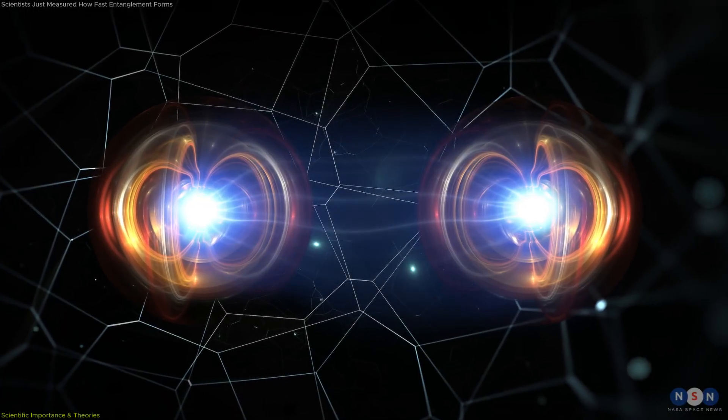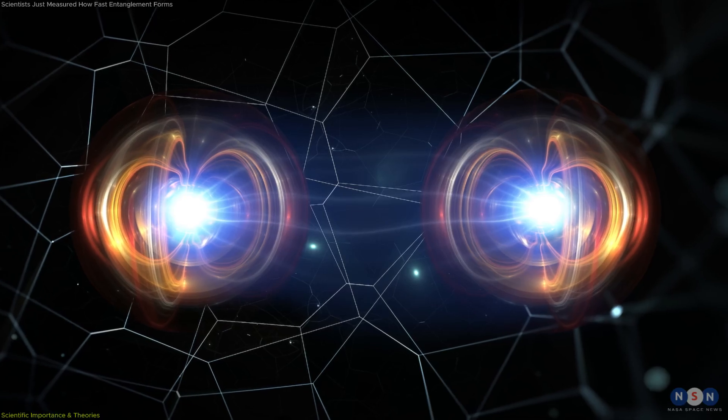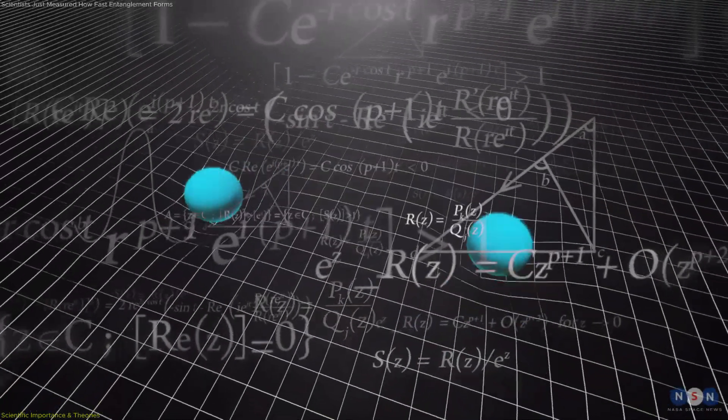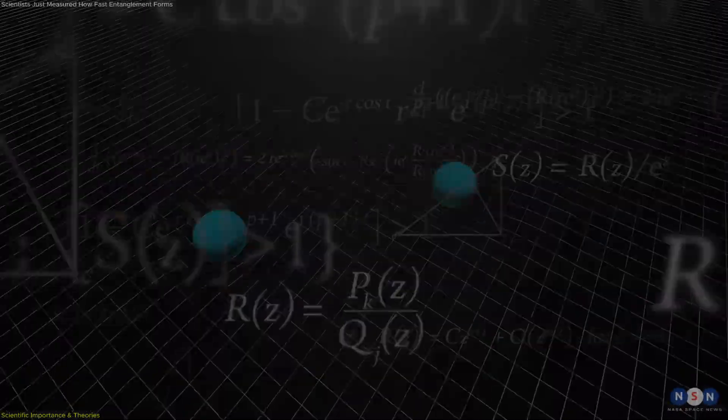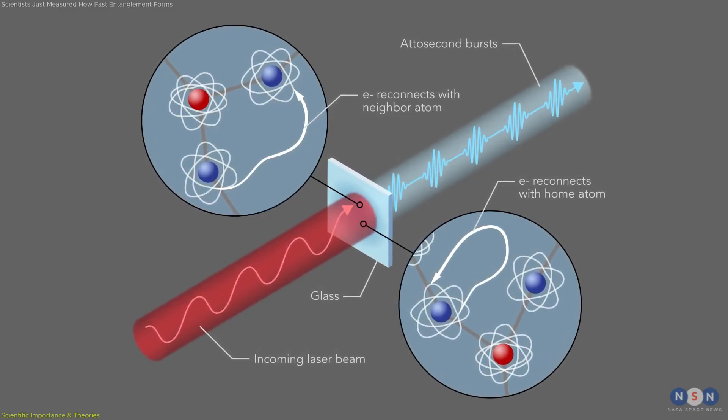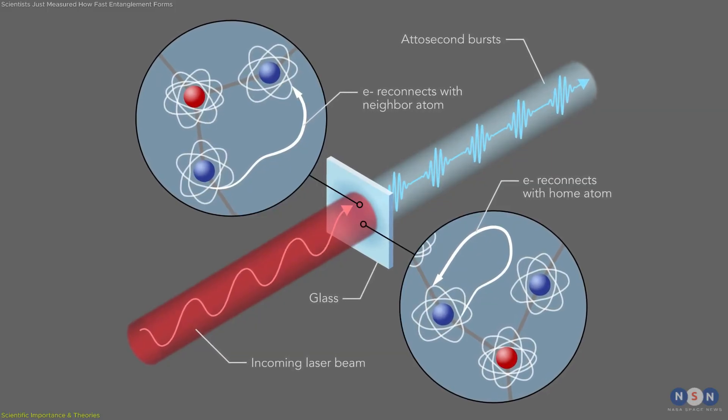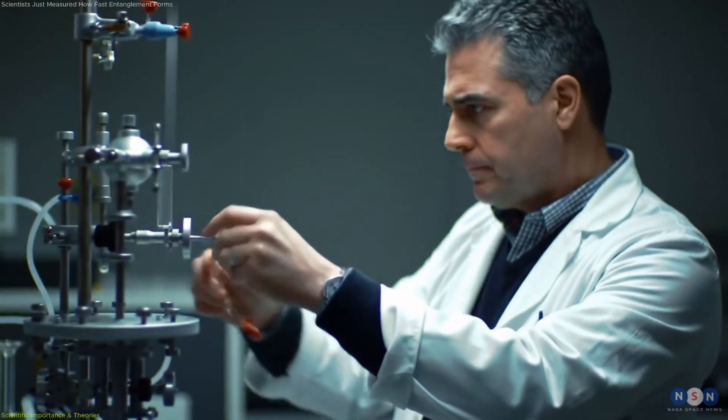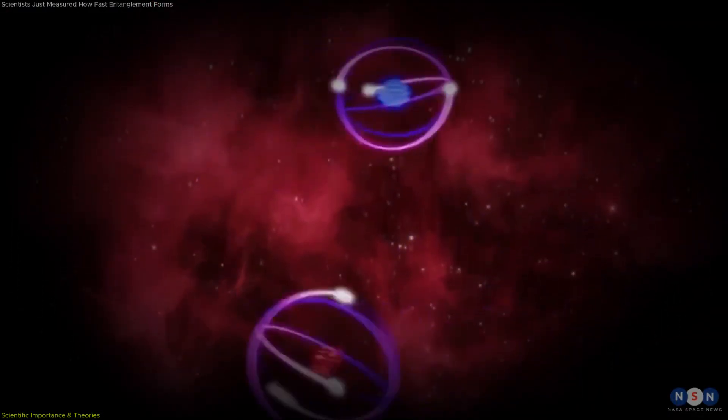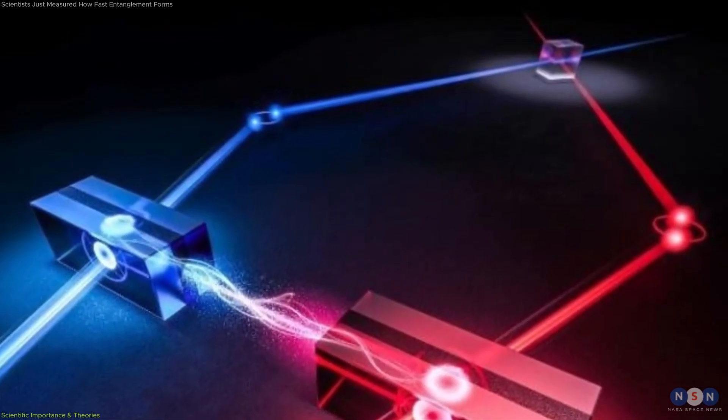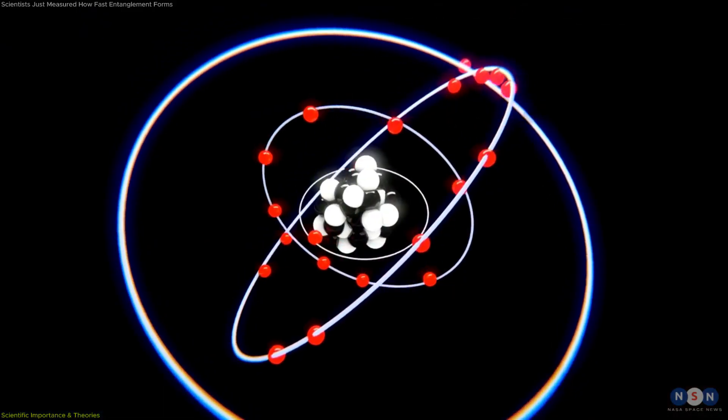What this work adds is the missing temporal picture of how entanglement comes into existence. The result also connects entanglement to the growing field of ultra-fast quantum dynamics. Over the past two decades, attosecond lasers have allowed scientists to observe electrons tunneling through barriers, shifting orbitals, and responding to strong fields in real time. This study extends that capability to the formation of quantum correlations themselves. Entanglement is no longer just a mathematical feature of quantum theory. It is revealed as a physical process embedded in the same ultra-fast interactions that govern electron motion.